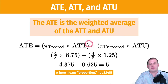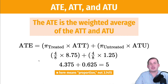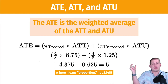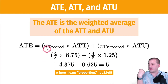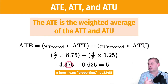The official formula uses π — but note that is not 3.14. Econometricians use π to stand for proportion, distinct from P which means probability. We find the proportion of people who are treated, multiply by the ATT; find the proportion who are not treated, multiply by the ATU. If we combine those, what we're left with is the average treatment effect.